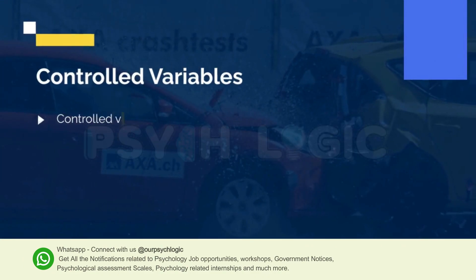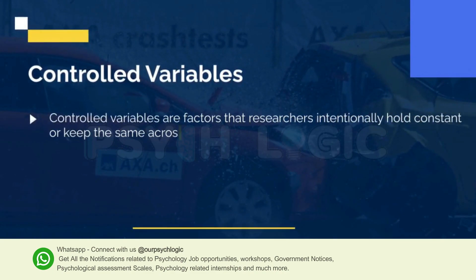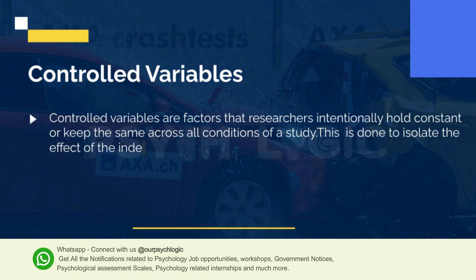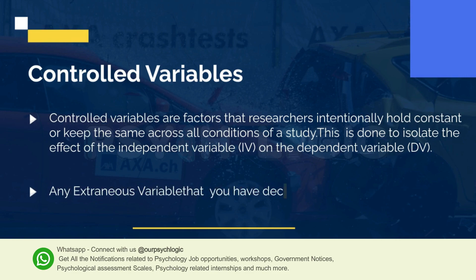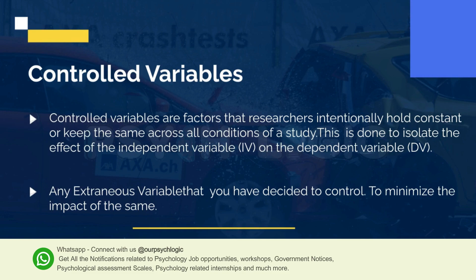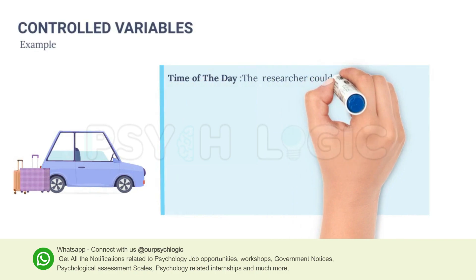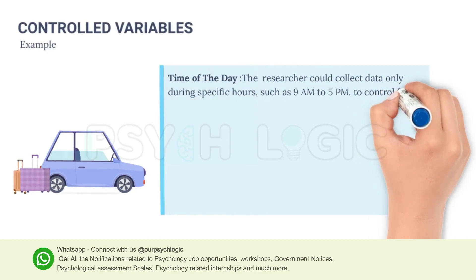Now discussing controlled variables. Controlled variables are factors that researchers intentionally hold constant or keep the same across all conditions of the study. This is done to isolate the effect of the independent variable on the dependent variable. Taking the same example — rain as independent variable and accidents as dependent variable — some possible controlled variables are those we can control. Unlike extraneous variables that unintentionally affect our research, if we decide to control those variables so they do not impact our study, we call them controlled variables. For example, time of day: researchers could collect data only during specific hours such as 9 am to 5 pm.